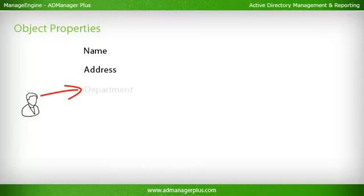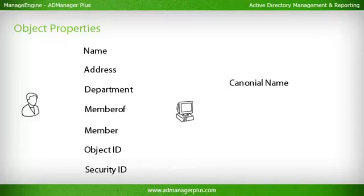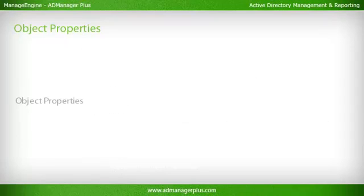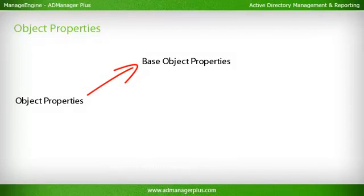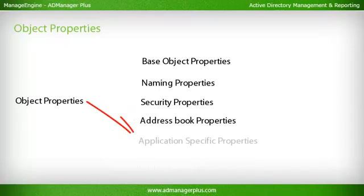Object Properties: Each object in an Active Directory will have multiple properties or attributes which describe the object. Examples of object attributes are Name, Address, Department, Member Of, Object ID, Security ID, etc. Some attributes like the CN (Canonical Name) and SID are replicated among all DCs in a domain, and some attributes like GUID are replicated in the global catalog as well. Object properties can be broadly classified into Base Object Properties, Naming Properties, Security Properties, Address Book Properties, and Application-Specific Properties which are specific to individual applications.